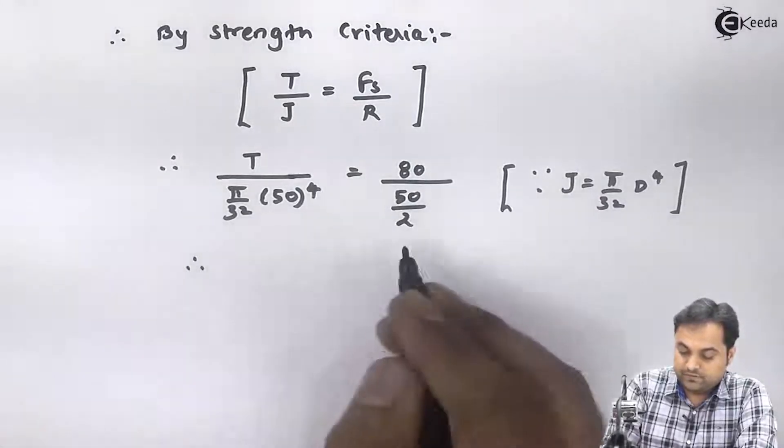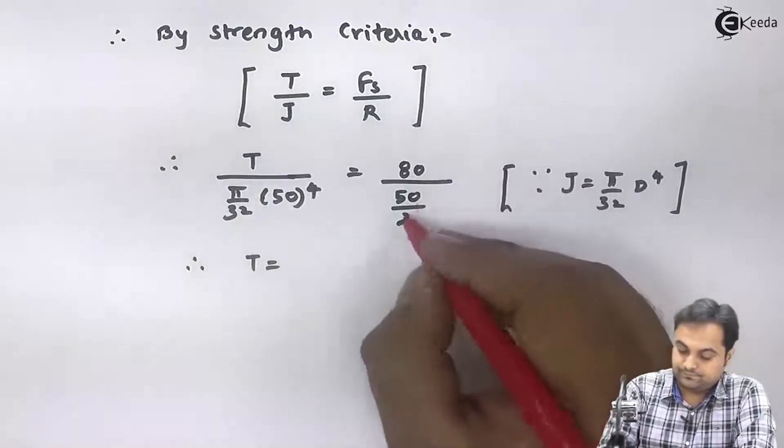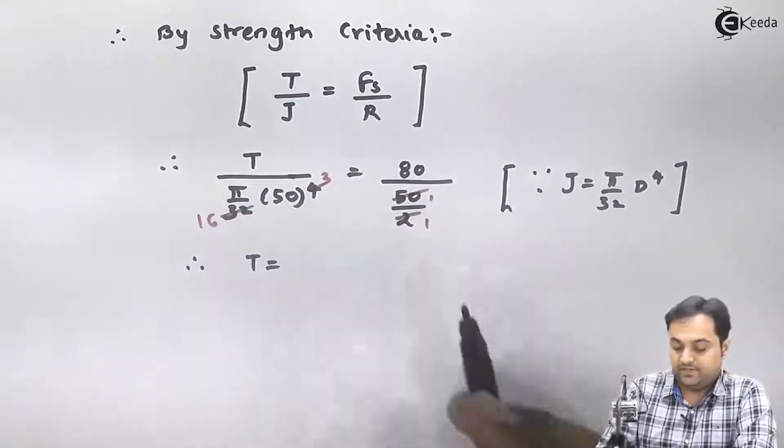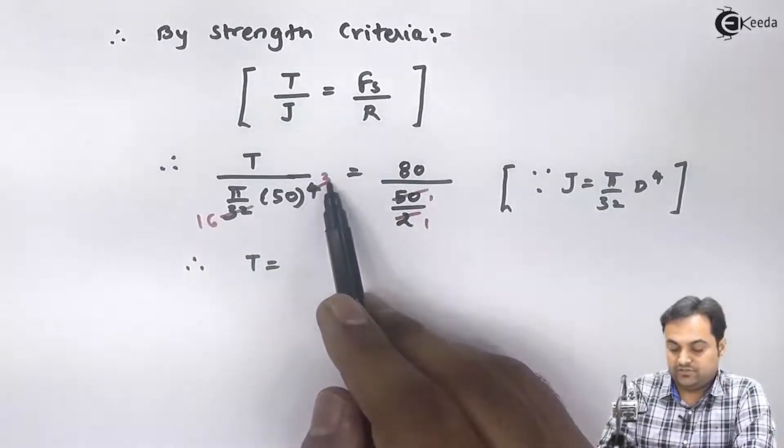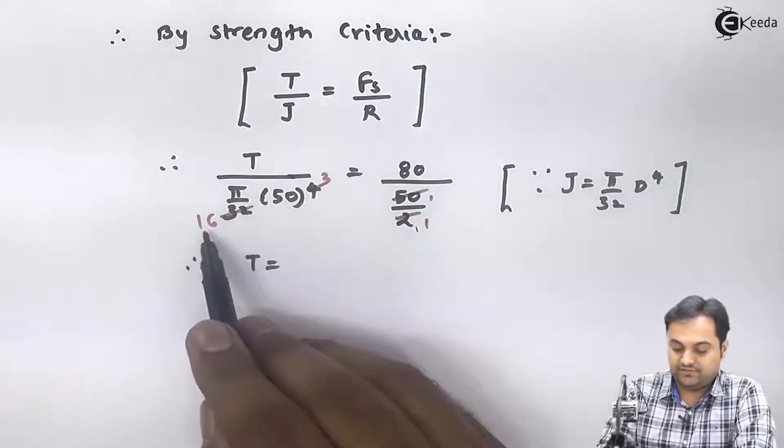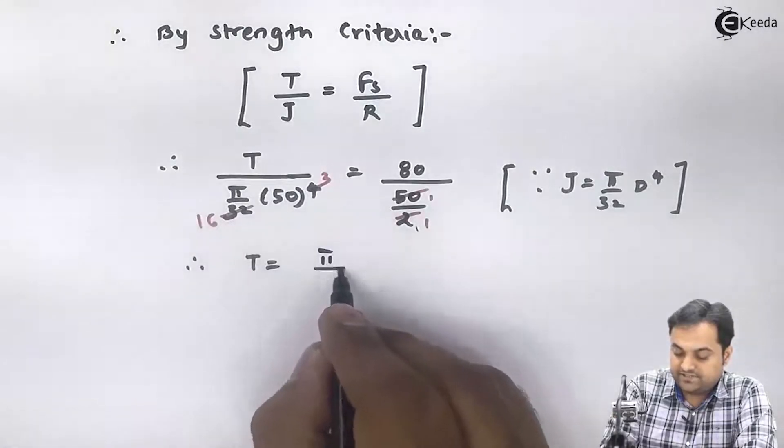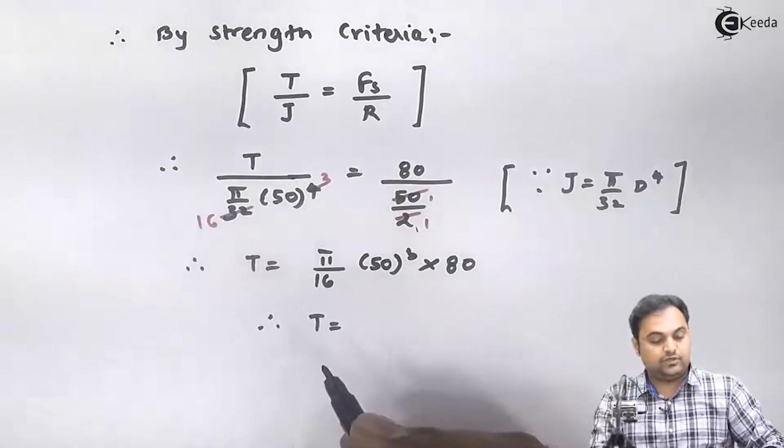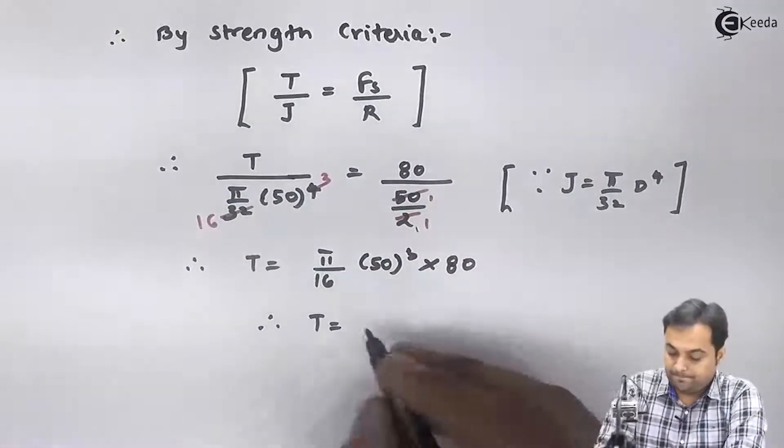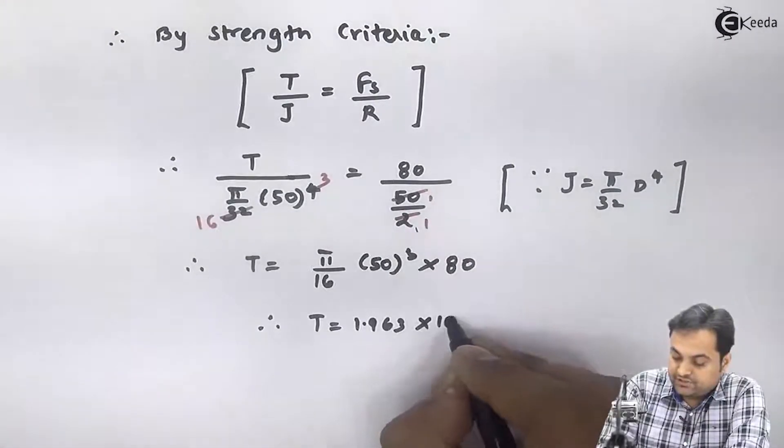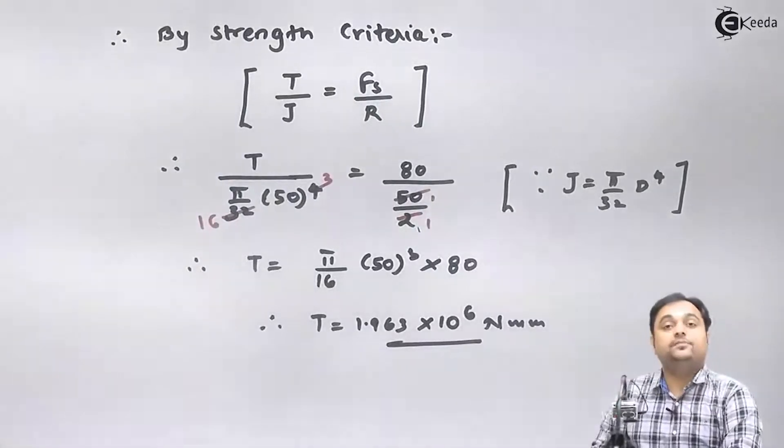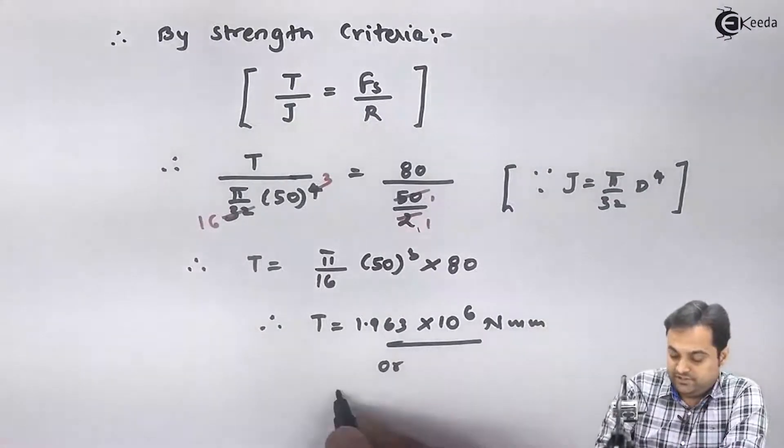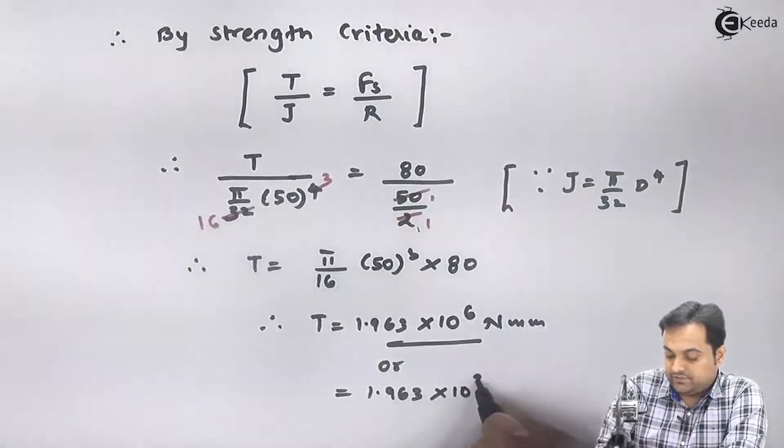Therefore I will get T is equal to, if I cancel the terms on left-hand side and right-hand side, after the cancellation I will get this as pi by 16 into 50 cube multiplied by 80. From this I will get my answer of torque as 1.963 into 10 raised to 6 Newton millimeter. Since we have to find power in watts, we should keep the torque in Newton meter, so after dividing by 1000 it becomes 1.963 into 10 raised to 3 Newton meter.